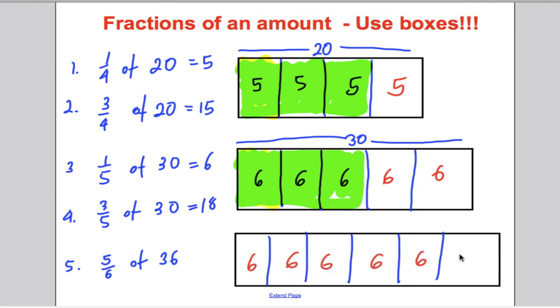And if you want five sixths, you want five out of those six boxes. So you colour in five of the boxes. And the answer must be six, 12, 18, 24, 30. And we've done those five questions.